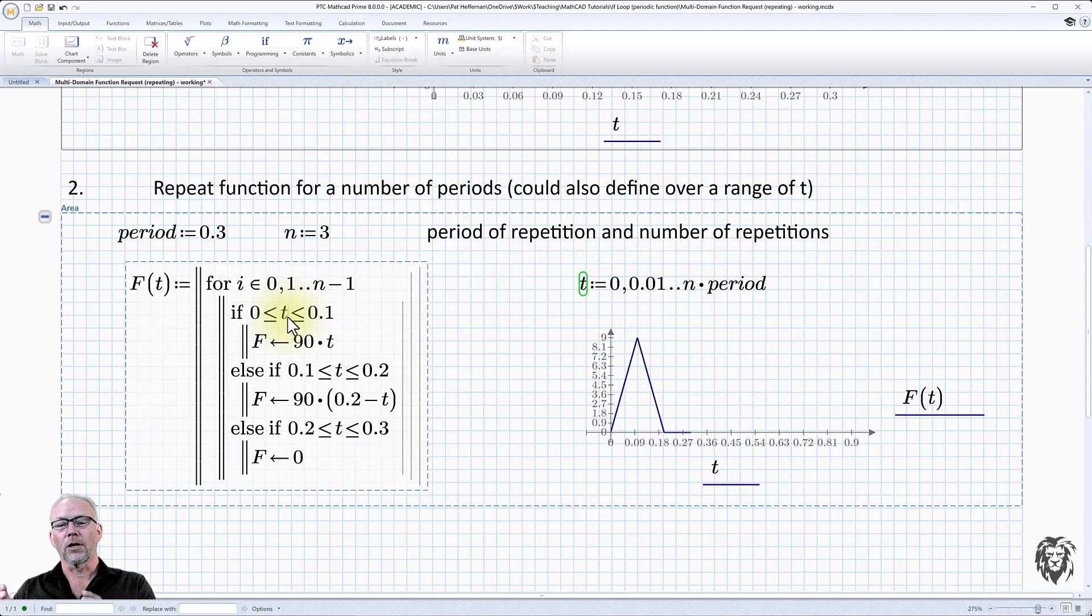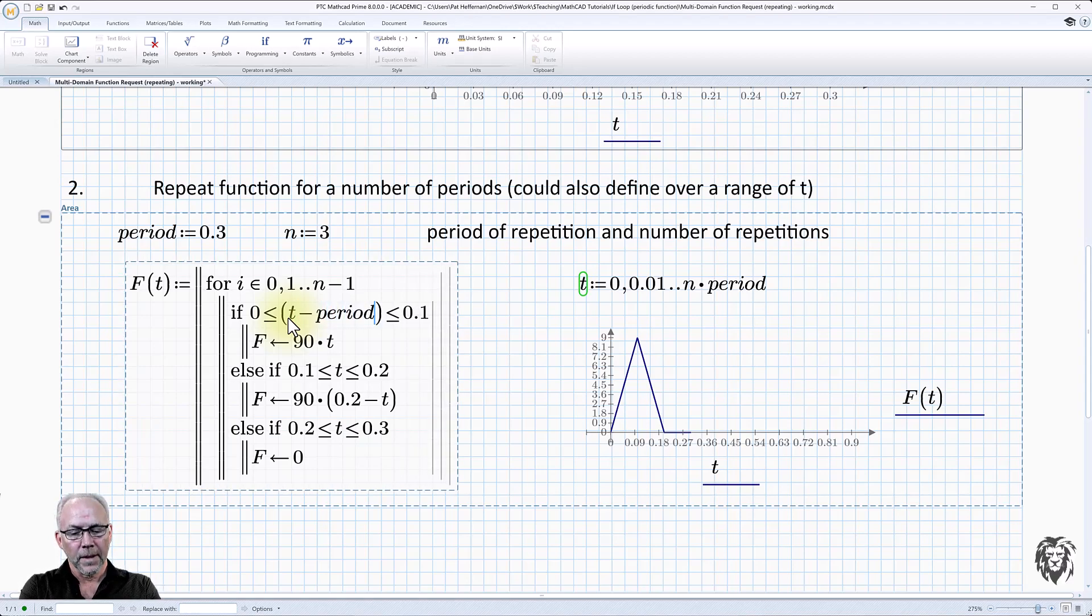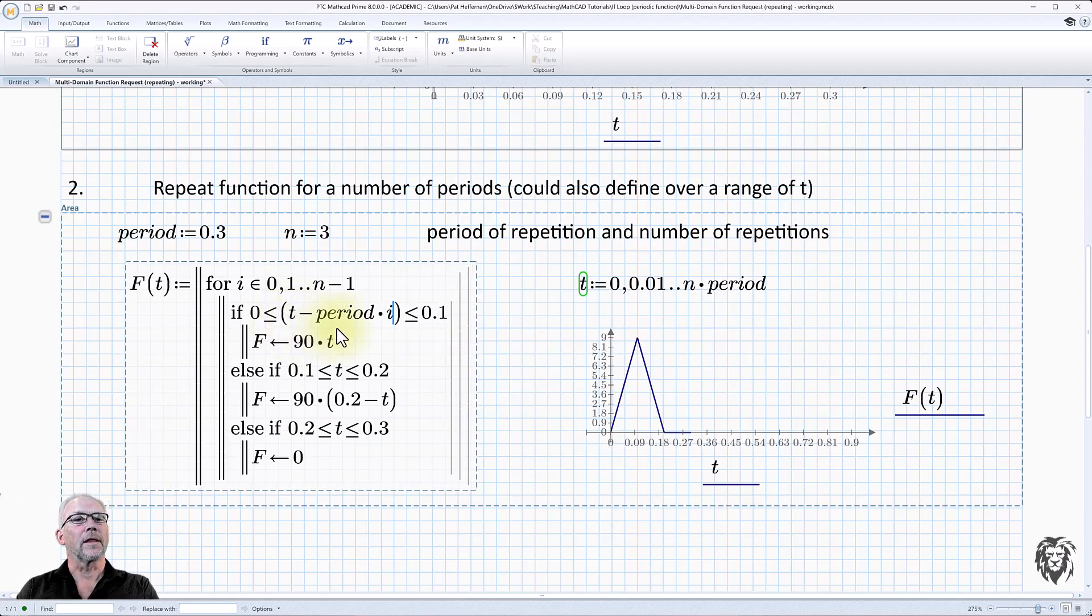And so what I want to do is I'm going to have to adjust my value of T. And really what I want to do logically is to make it do the calculation as if it was in that first period, even though you're returning it for ever increasing values of T. And so the way I'm going to do that, I'm going to put this in brackets here. So we have T, and we're going to go minus the period times the iteration i that we're in.